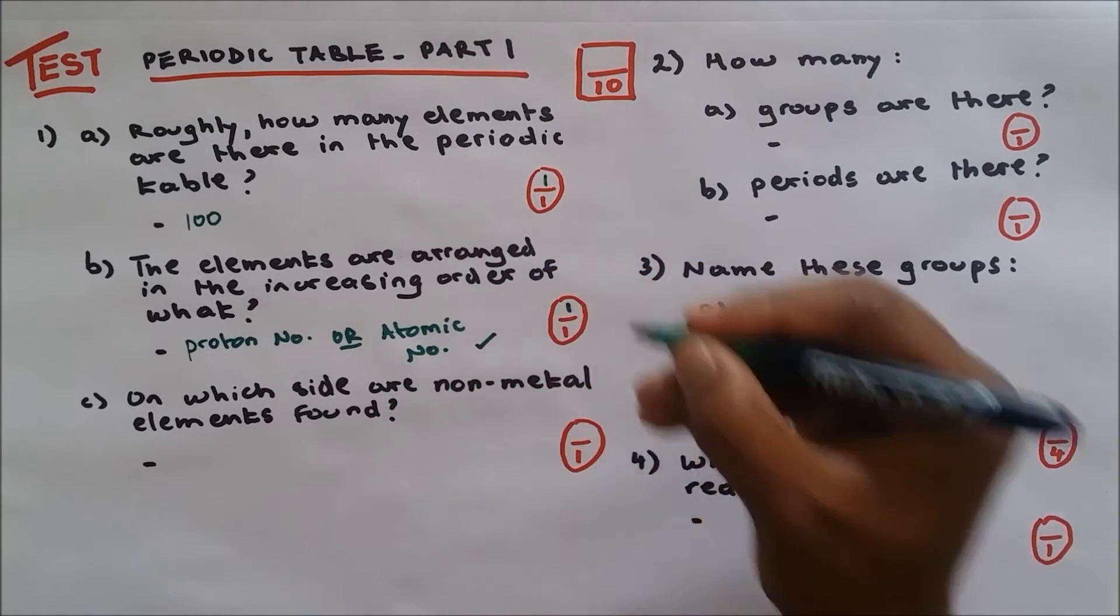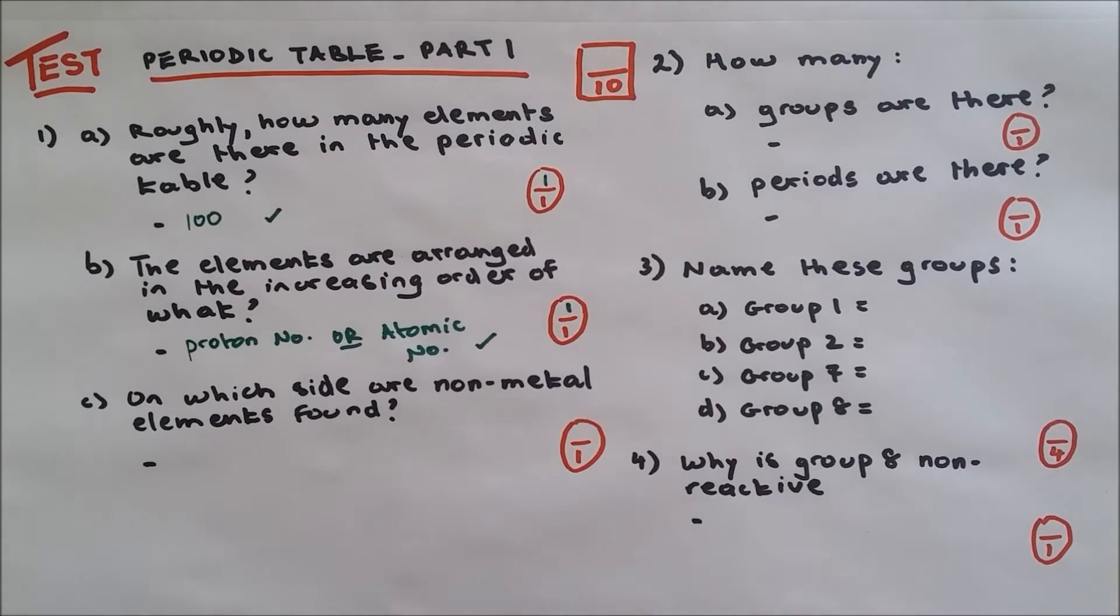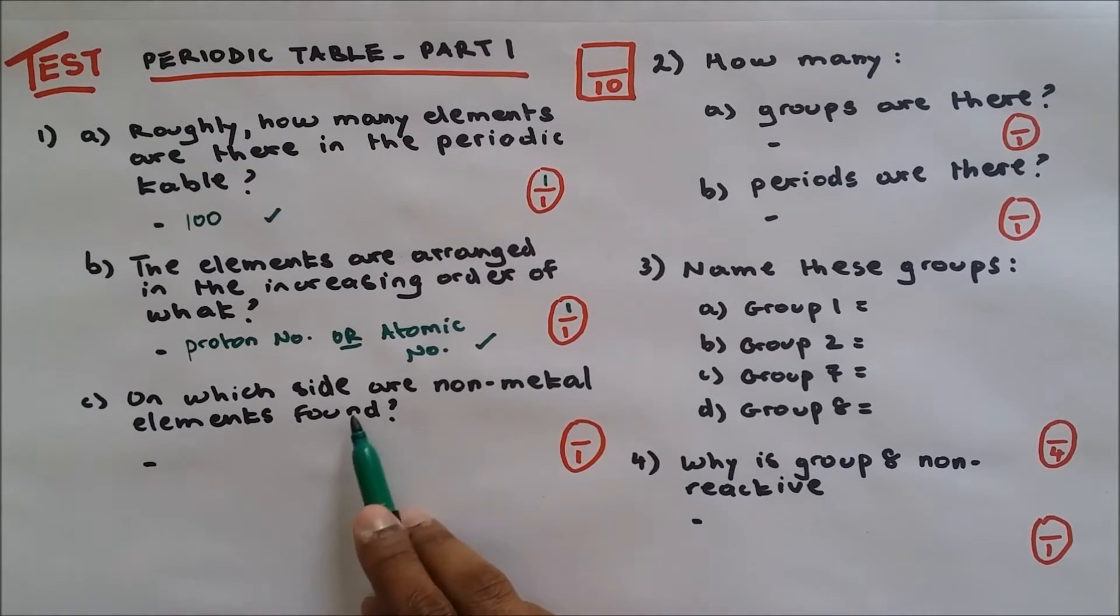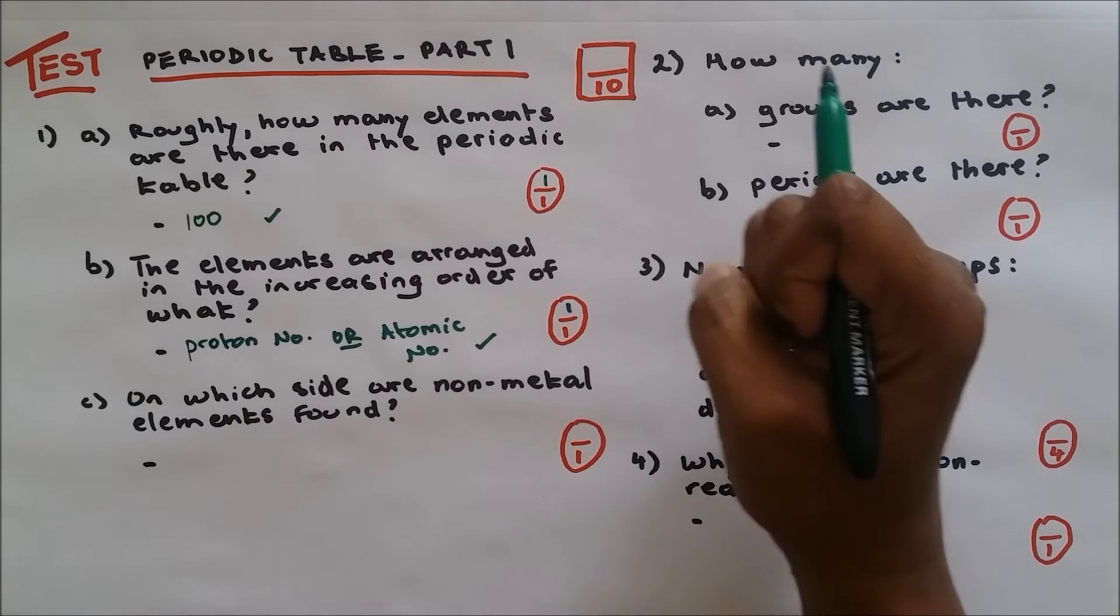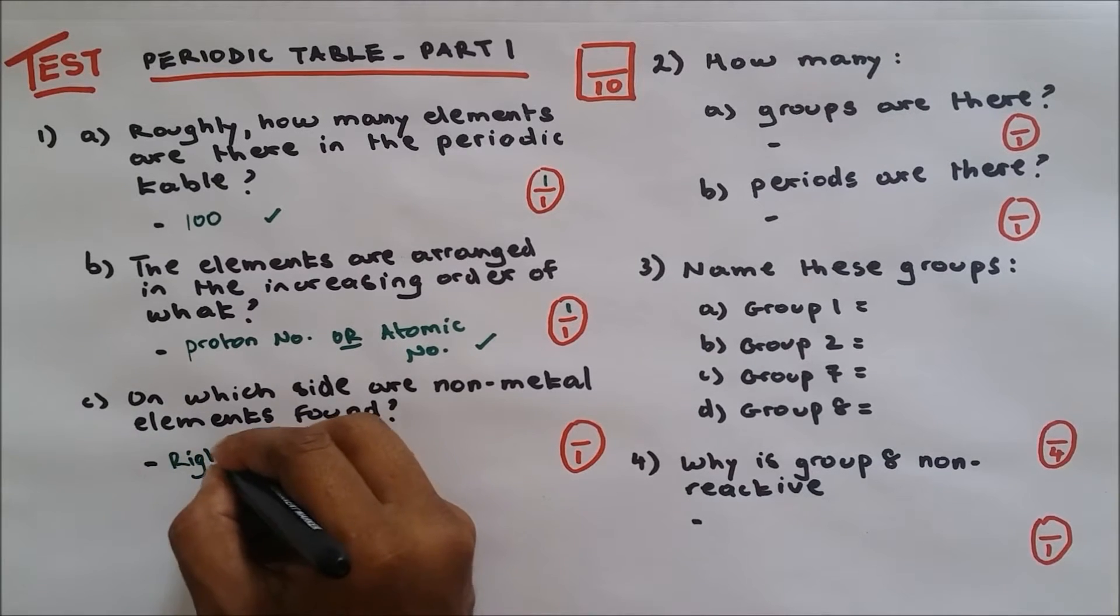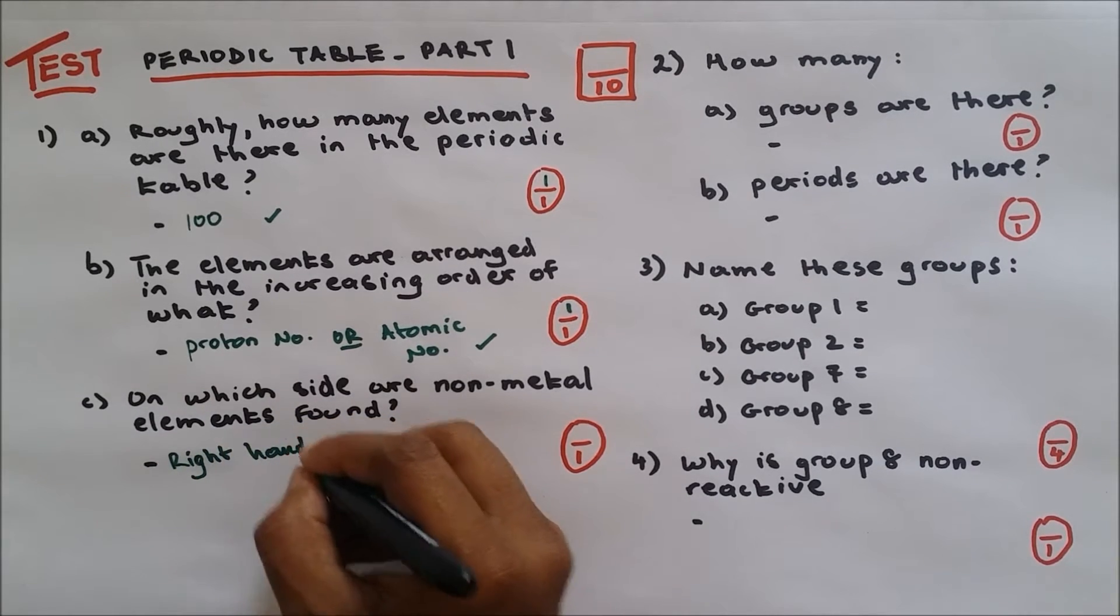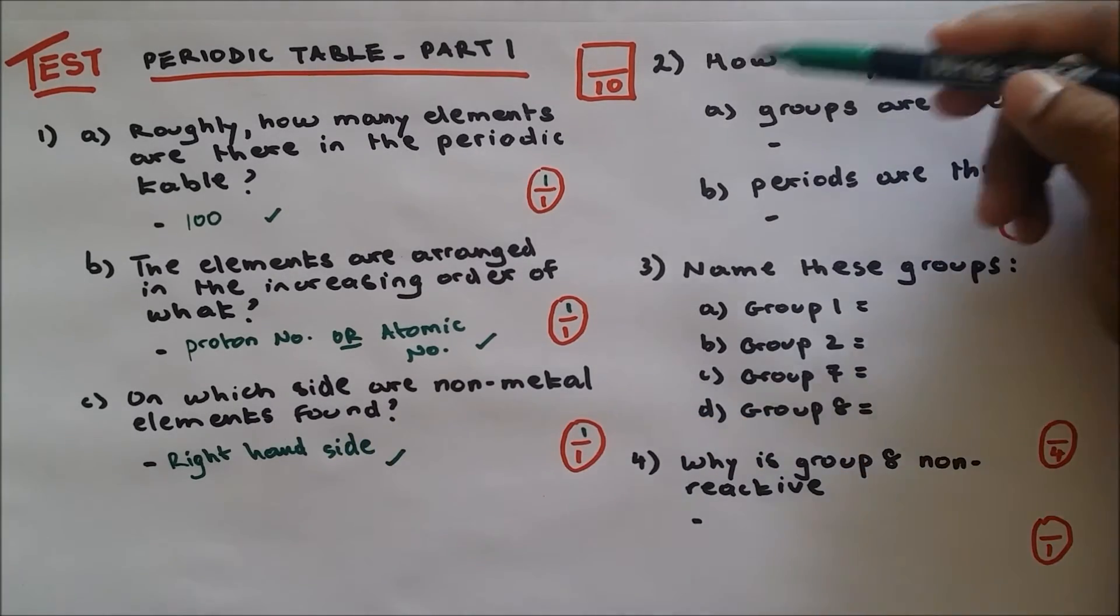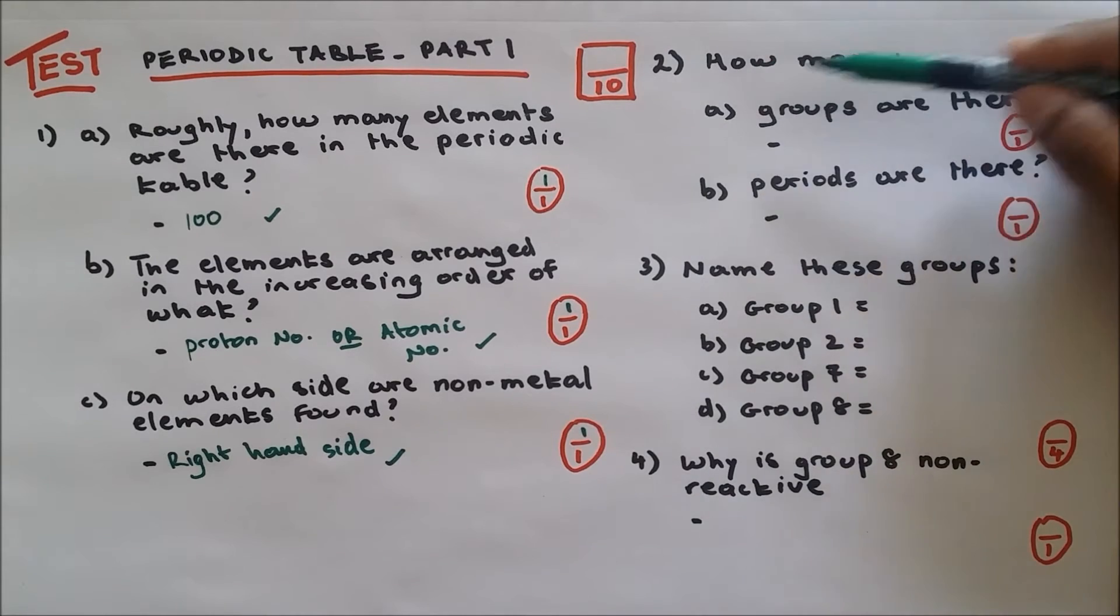Question number one C: on which side are non-metal elements found? Non-metal elements are found on the right-hand side of the periodic table. So one out of one. Question number two: how many groups are there in the periodic table?